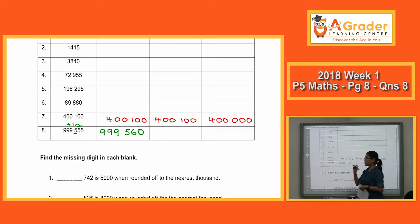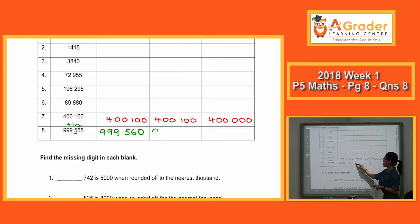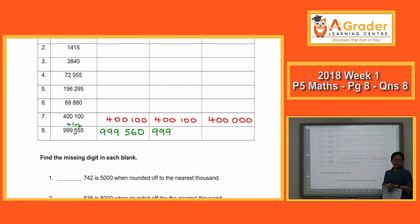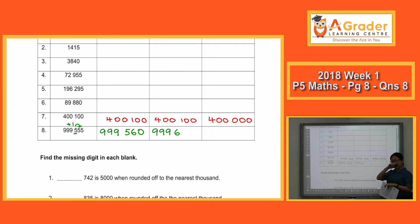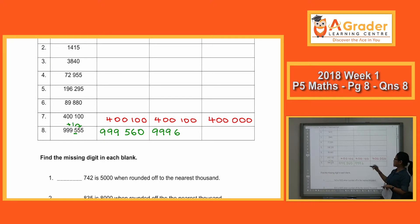So again, the same thing — we copy those in front first: 9, 9, 9. Then the 5 becomes 6. Now our third step — how many zeros? 2. Because hundreds means there are two zeros.